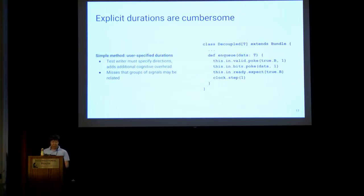The thing about ownership is that you need an associated duration. The simplest solution might just be to tack a duration onto poke. But that puts more work on a test writer, which makes writing test libraries a bit more cumbersome. And it also has no way to encode groups of related signals. For example, bits and valid always go together.